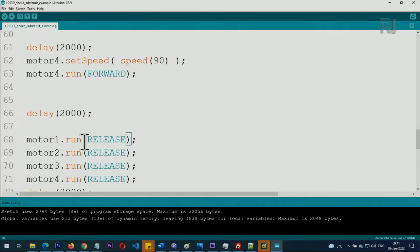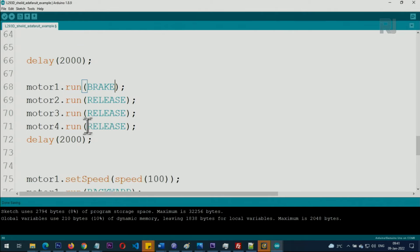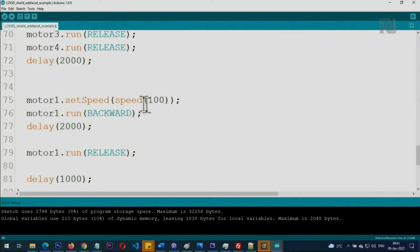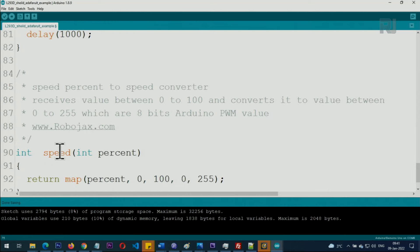So when you want to release it or stop it, just put motor number, motor one for example, dot run release. So this will release the motor from controlling and it will stop. We do not have proper brake here. They have BR AKE, it's supposed to be fast brake, but it doesn't work much.